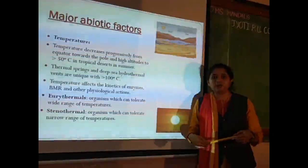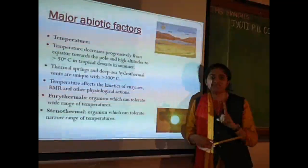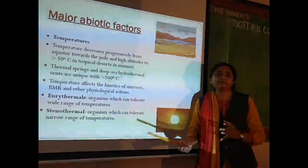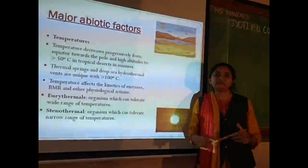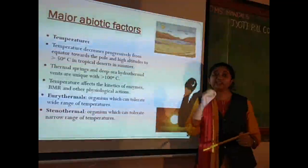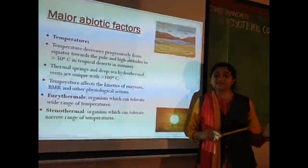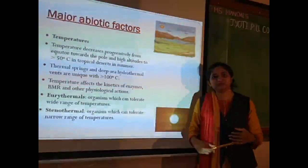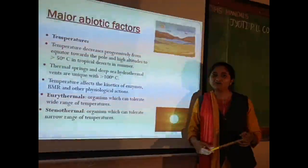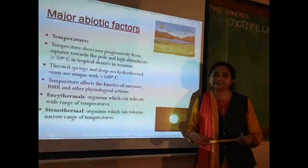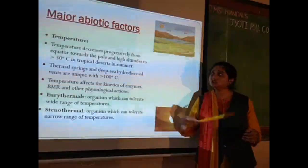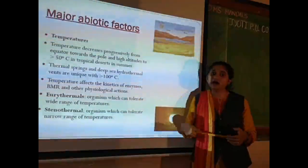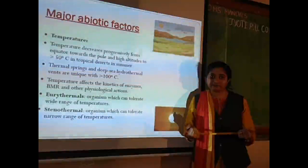What is an organism? An organism is one single individual — you, me, a dog, a cat, an elephant, or a small bacteria. Right from pathogens to parasites, right from predators to human beings, all of us are organisms as individuals. So how are these abiotic factors going to affect the organisms?